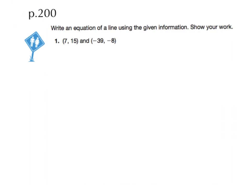As your steps already told you, our first job is going to be to calculate M using the formula y sub 2 minus y sub 1 over x sub 2 minus x sub 1.